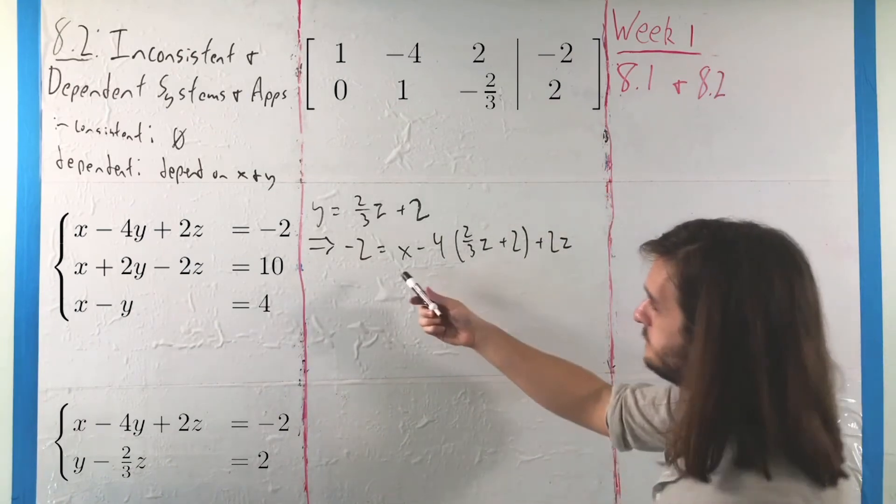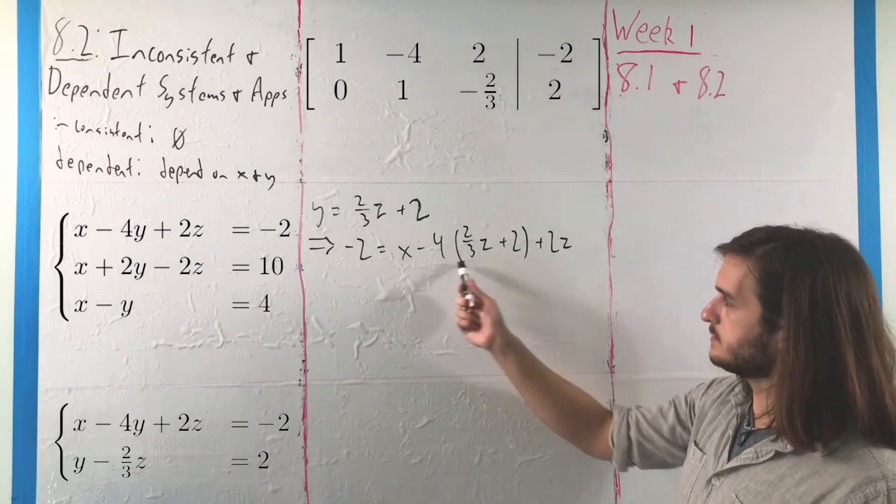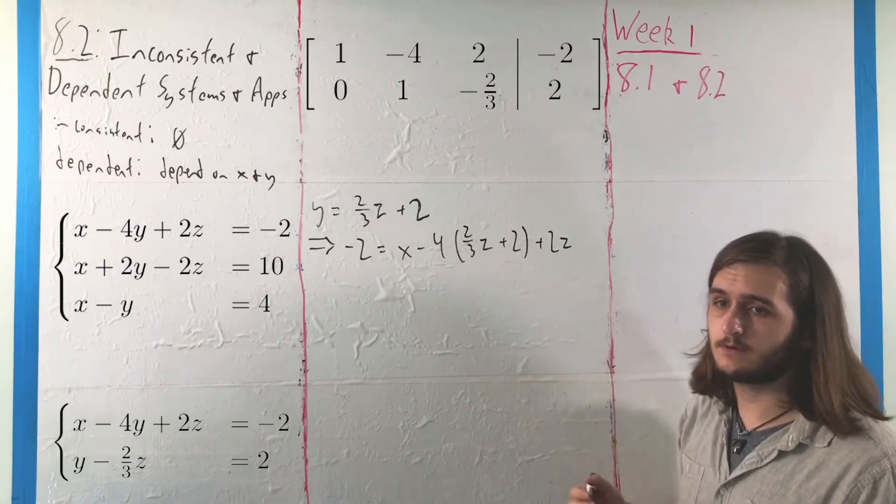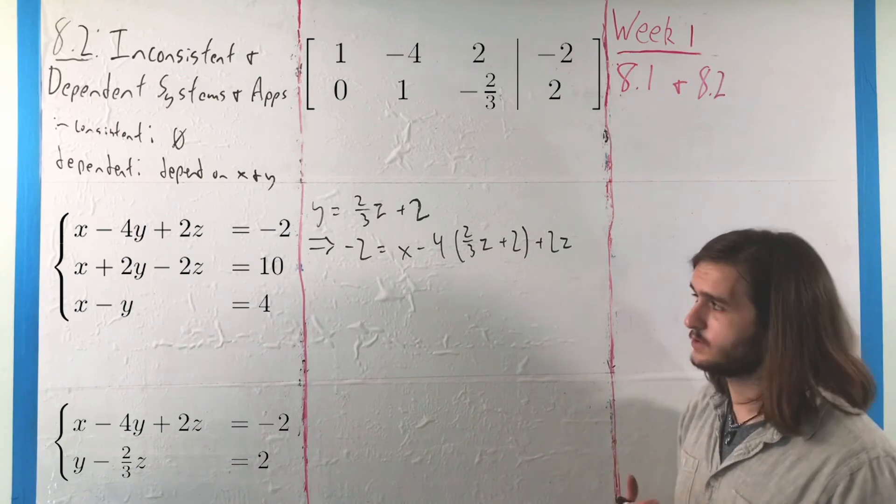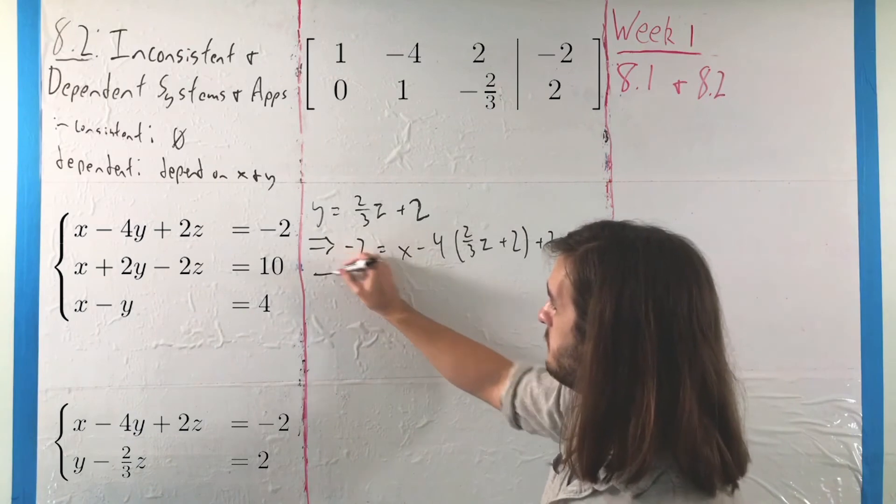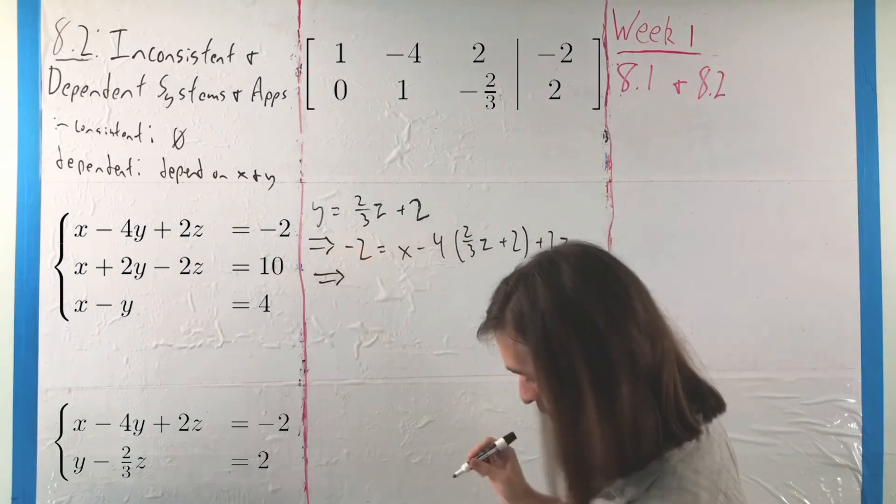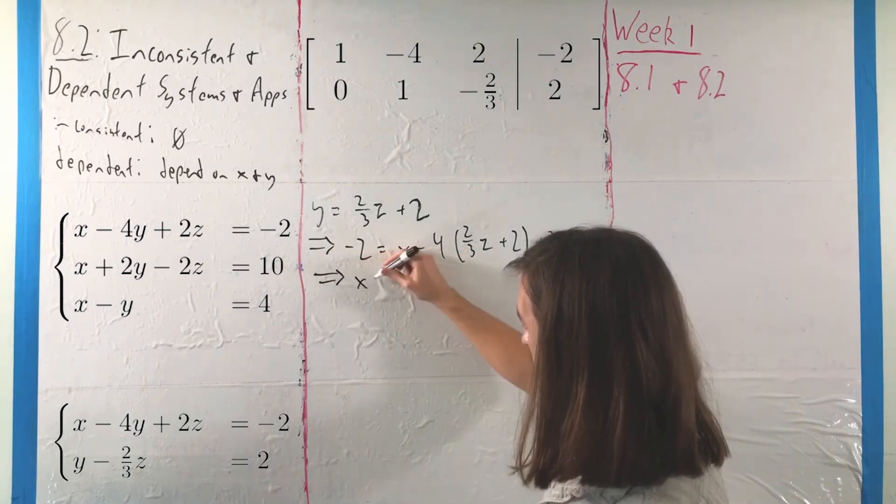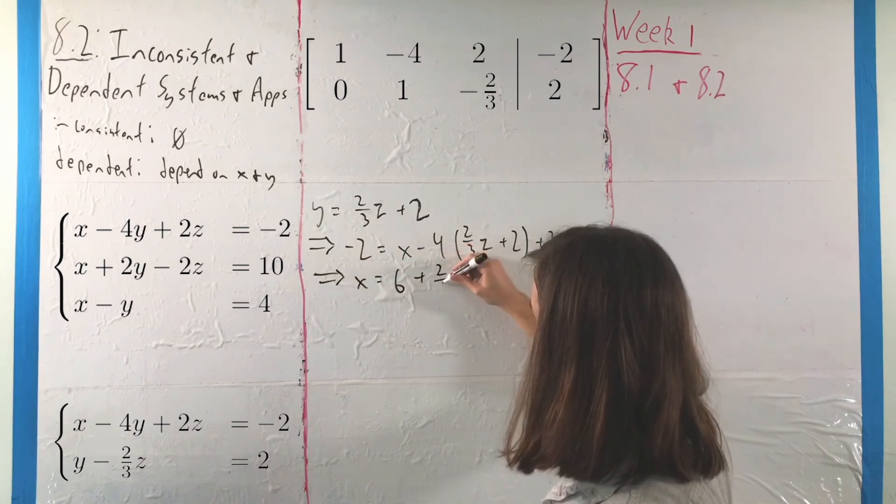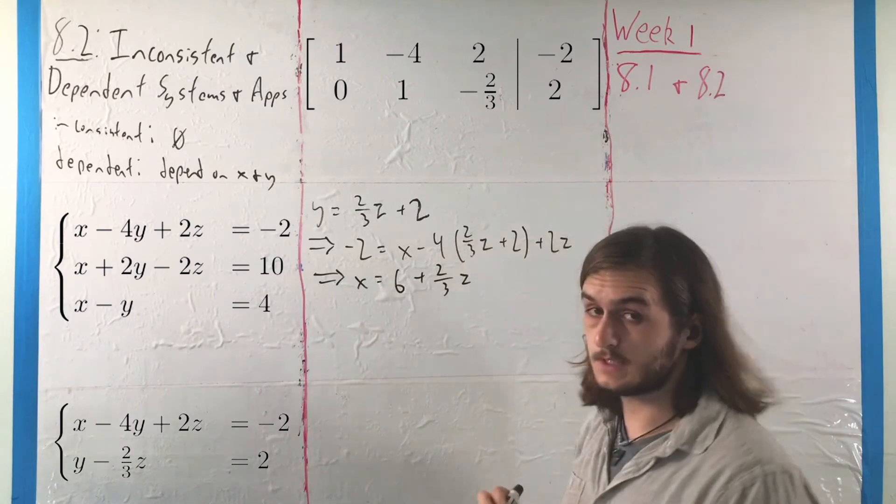And now with x and a whole bunch of z's, we can push this around a little bit, and I'll let you guys see how you'd push that around if you check the notes or you can check this for yourself. But what you'd end up with is that x is equal to 6 plus 2 thirds z.